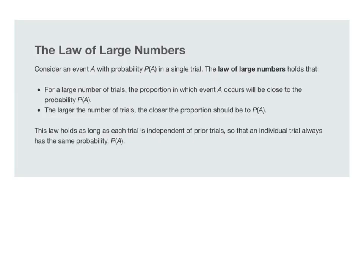The law of large numbers states: consider an event with probability P(A) in a single trial. The law of large numbers holds that for a large number of trials, the proportion in which the event A occurs will be close to that expected probability P(A). The larger the number of trials, the closer the proportion should be to P(A), and this law holds as long as each trial is independent of prior trials, so that an individual trial always has the same probability P(A).